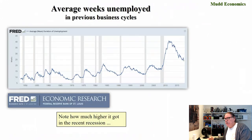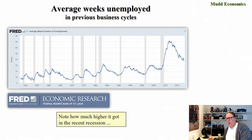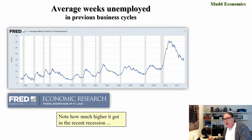Going back further, this is the FRED data from the Federal Reserve Bank of St. Louis, going clear to the end of World War II. You can see that the 40-week high was not just high compared to the previous two recessions — it was high compared to the entire post-war period, which is getting close to 80 years. That's a little bit worrisome that it happened in the last recession, and we don't want to see it happen in this next one.